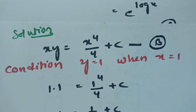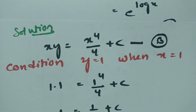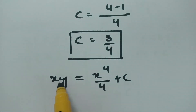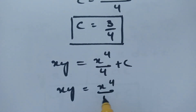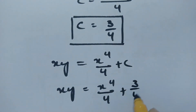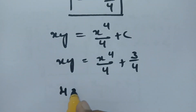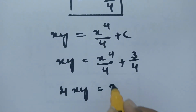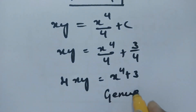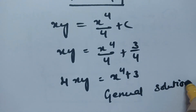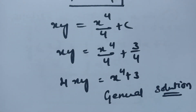This is the total solution. Substituting c equals 3/4 into x·y equals x⁴/4 plus c, and taking 4 as LCM, we get 4xy equals x⁴ plus 3. This is the required solution for the given linear differential equation.